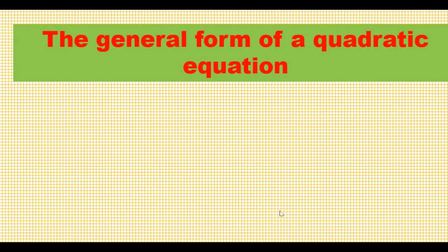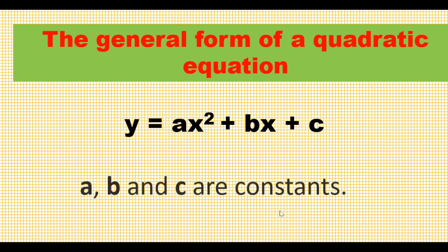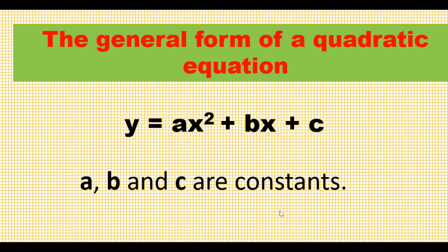The general form of a quadratic equation is given by y equals ax squared plus bx plus c, where a, b, and c are constants, and a and b are coefficients of x squared and x respectively.